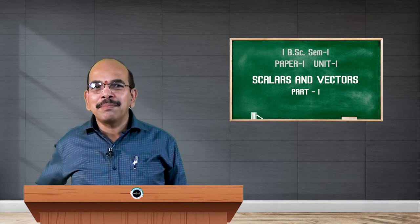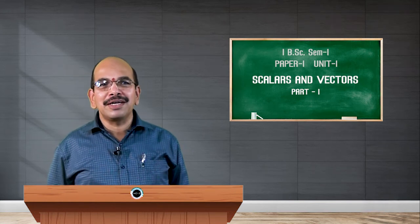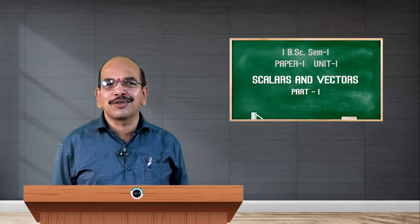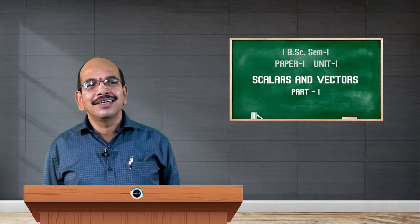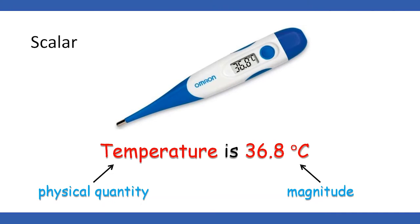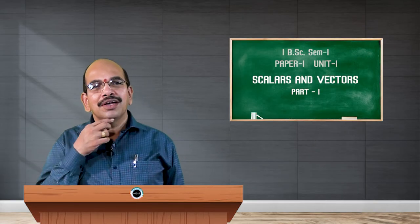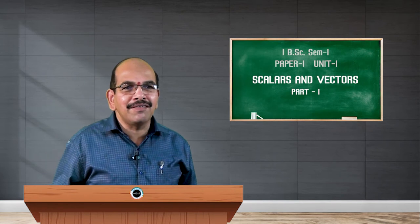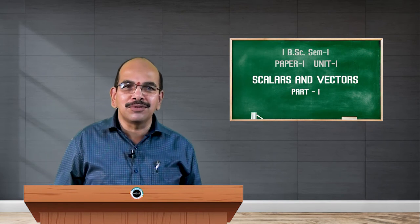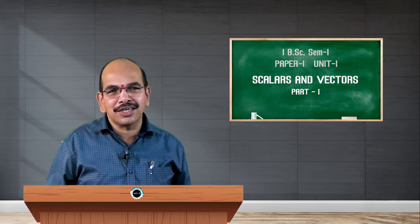In the same way, temperature is also a scalar quantity. In the figure, it shows 36.8 degrees centigrade — degree centigrade is the unit whereas 36.8 is the magnitude. So this is how we look at these quantities having only magnitude and no direction.